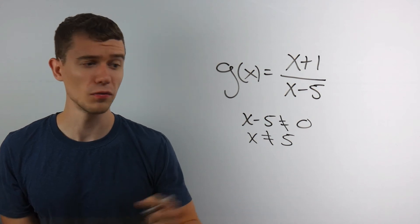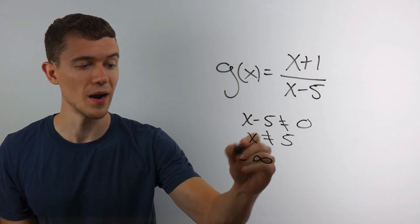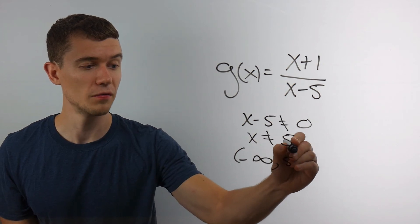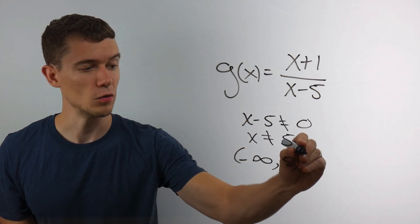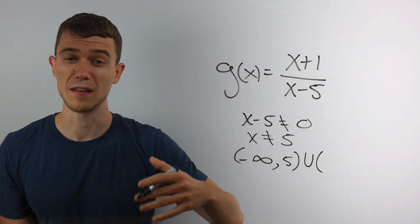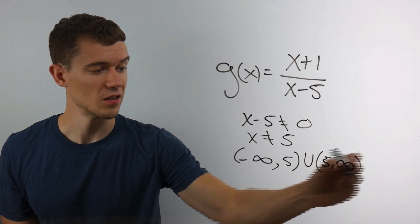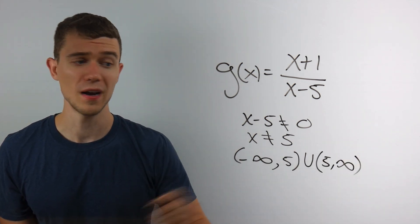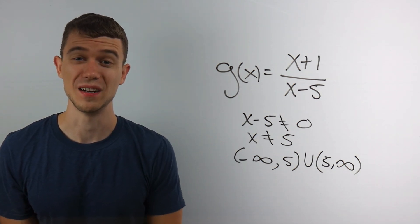If you want to write this in interval notation, all the numbers except five, you would write minus infinity comma five parenthesis. The parenthesis is because we're not including. You would use a U for union. It's a mathematical way of saying or five to infinity. So this is all the numbers up to five or all the numbers after five. That's the domain of this function.